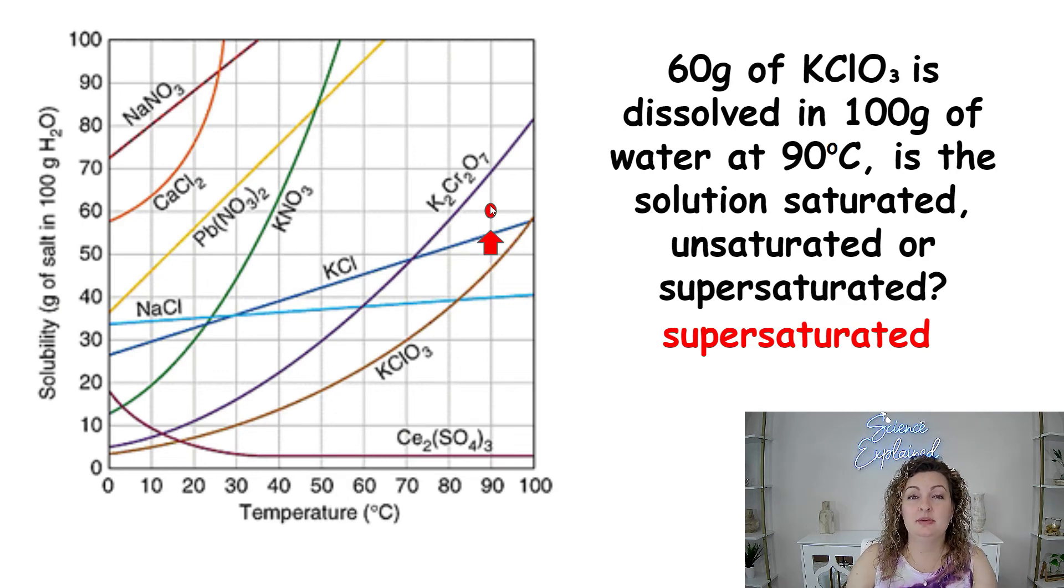Anything above the line is going to be supersaturated, which means it has dissolved all it can. And there's still extra that will either fall out of solution or is already at the bottom of the beaker that will not dissolve at that temperature. So this is a supersaturated solution.